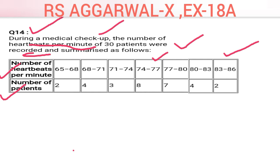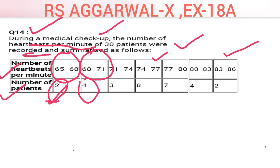We are solving this for a subscriber who had a doubt in this question. If you also have any doubt from any chapter, you can comment and let me know — I will try to clear your doubts as soon as possible. In question 14, you are given a table. The heartbeat of two patients was recorded between 65 to 68, and the heartbeat of four patients was between 68 to 71. We have to calculate the arithmetic mean from this table.